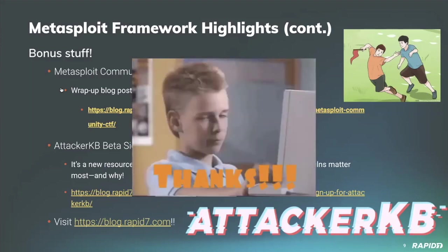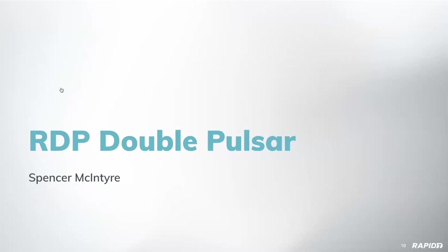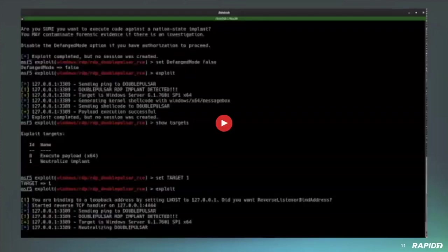On to demos. This week the team provided some videos. The RDP Double Pulsar demo showcases the new exploit module designed to leverage the RDP variant of the Double Pulsar implant from the FuzzBunch framework. The module is capable of both detecting and neutralizing implants as well as executing code. It came from Will Vu, and Spencer did the verification and recorded the demo video.